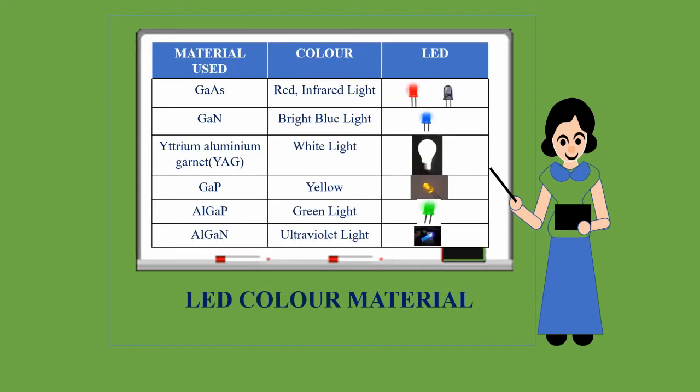Some materials are listed here: gallium arsenide emits red and infrared light, gallium nitride emits bright blue light, yttrium aluminum garnet (YAG) emits white light, gallium phosphide emits yellow light, and aluminum gallium phosphide emits green light.